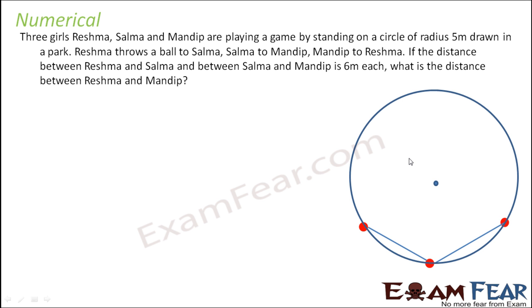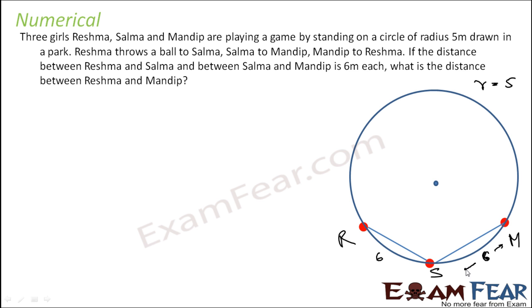Three girls — Reshma, Salman, and Mandib — are playing a game standing on a circle of radius 5 cm. Reshma throws a ball to Salman, Salman to Mandib, and Mandib back to Reshma. The distance between Reshma and Salman, and between Salman and Mandib, is 6 cm each. The radii are 5 and 5. We have to find the distance between Reshma and Mandib.